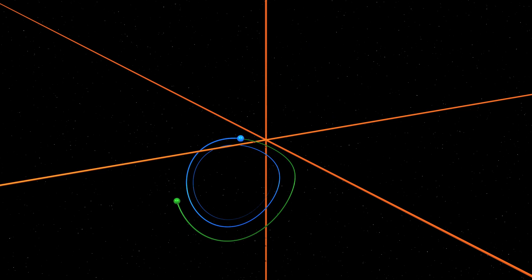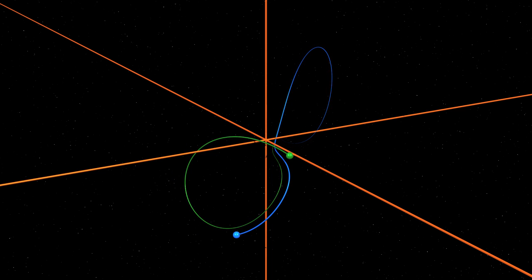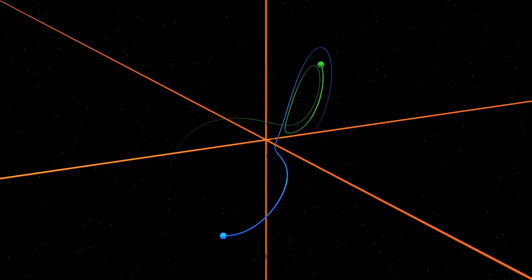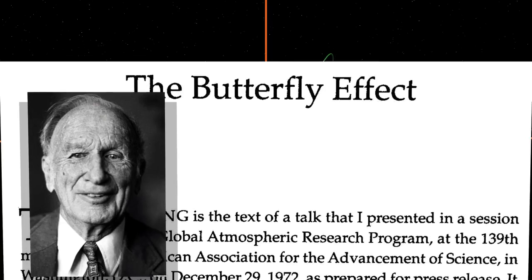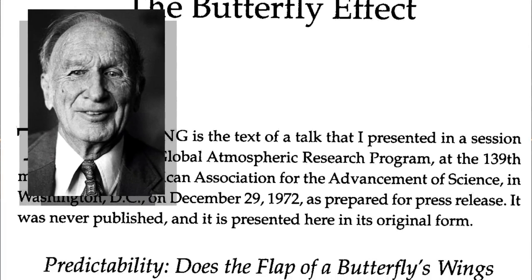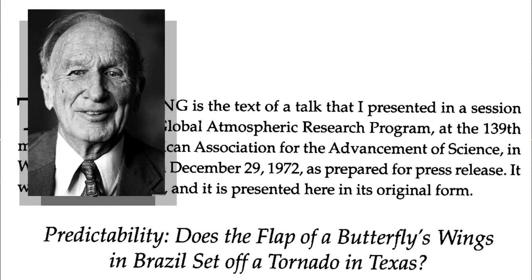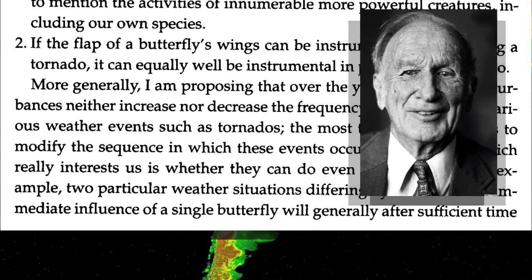In 1972, Lorenz was going to present his work at a prestigious conference, but he was late in sending in the title of his lecture. The organizer, Philip Merlize, was in a hurry to send the program to the participants, so he chose a title for Lorenz. Does the flap of a butterfly's wings in Brazil set off a tornado in Texas? The butterfly effect was born.